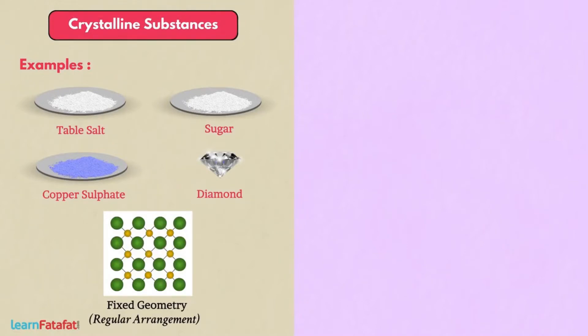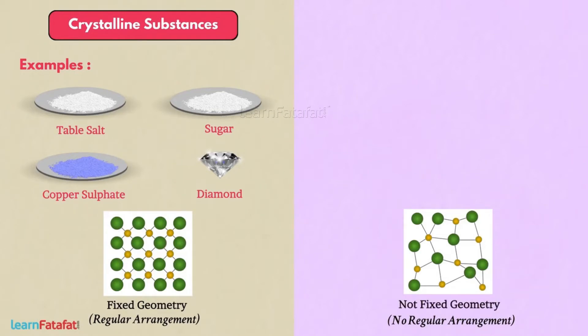Because of regular arrangement of constituents, there are other kind of solids in which there is no regular arrangement of constituents and so they do not give fixed geometry. These are called amorphous substances.